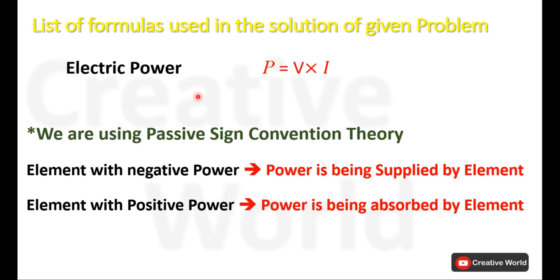According to this theory, an element with negative power will be considered as a power supplier, and an element with positive power will be considered as a power absorber.